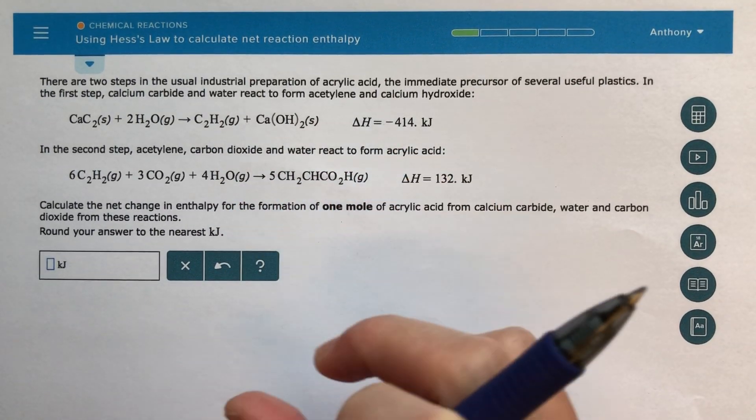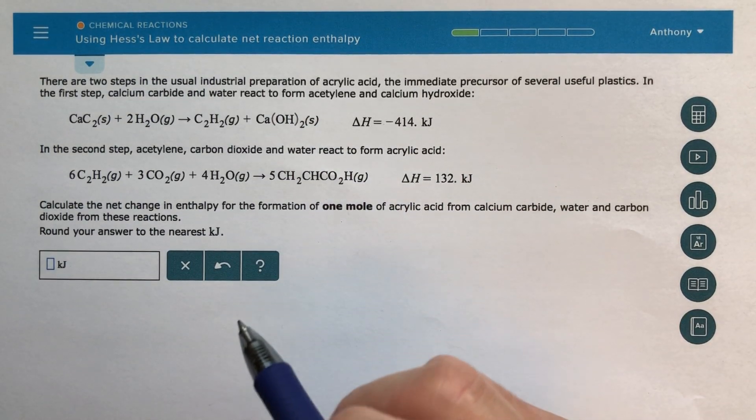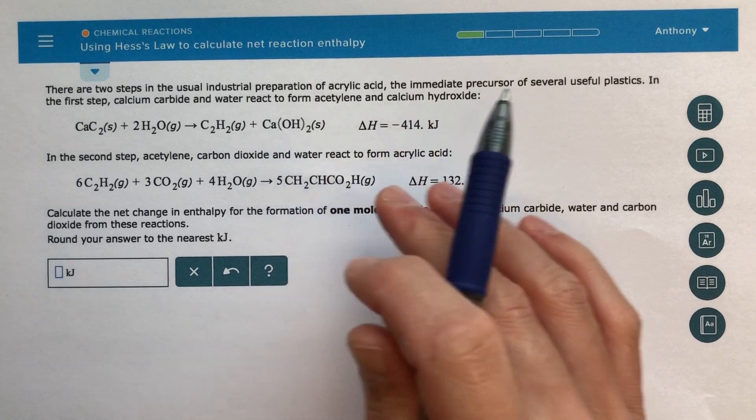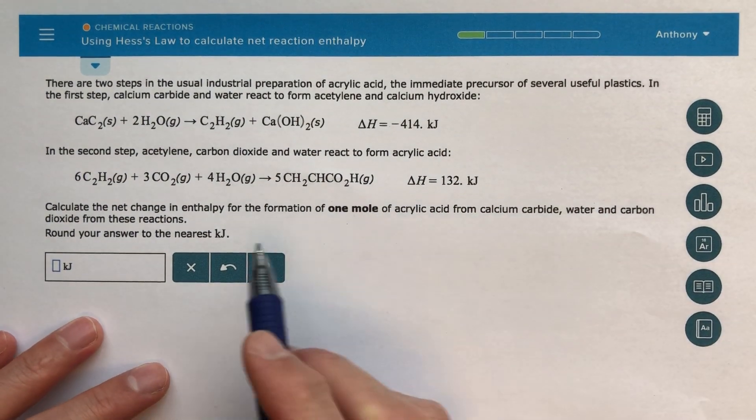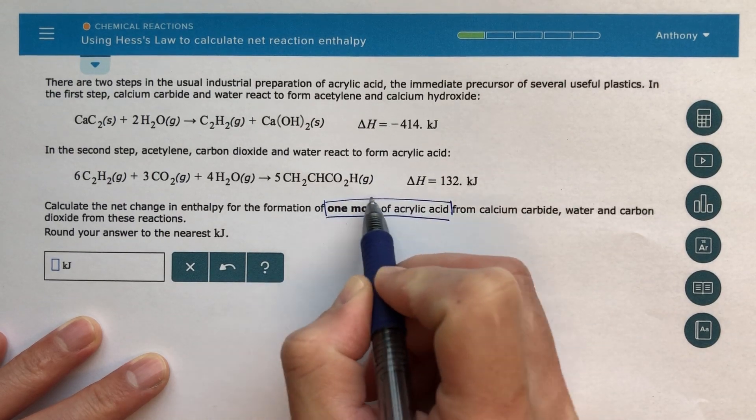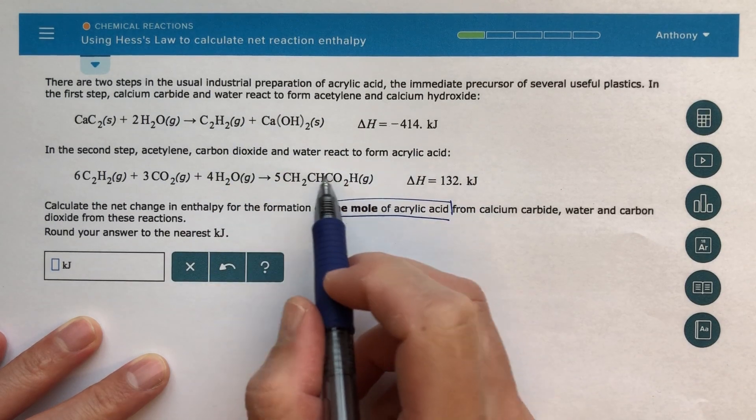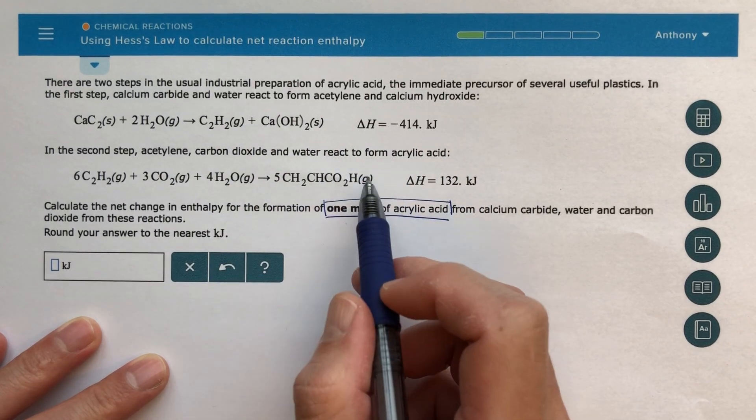We're going to be putting together a variety of information and concepts to get to this final answer. And the goal in this problem is to figure out the change in enthalpy for the formation of one mole of acrylic acid. So this species here, that is my acrylic acid. You can just read the problem to figure out which one that is. It tells you.